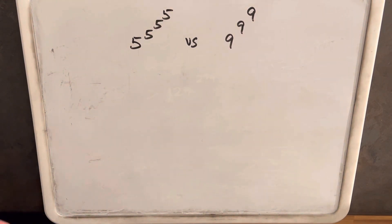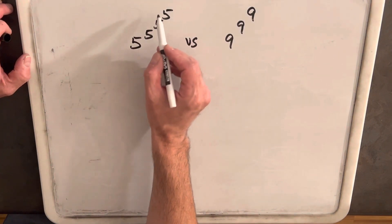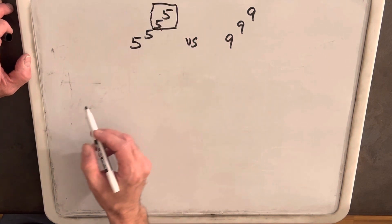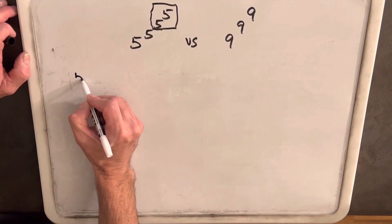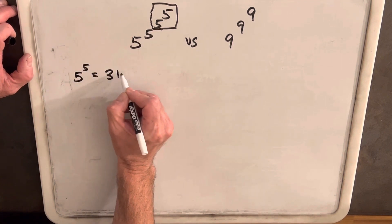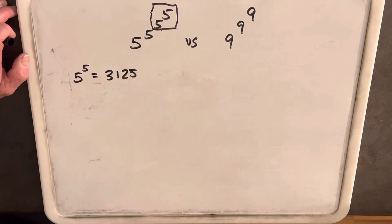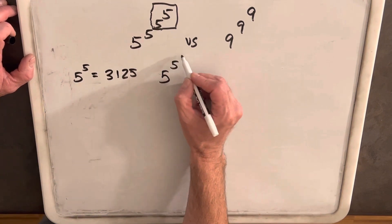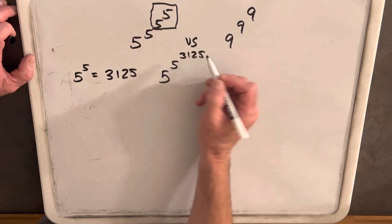Let's get started with the left side first. The first thing I want to do, let's just look at this right here. Try to simplify it. So if we just look at 5 to the 5, that's just actually 3,125. So I'm going to rewrite this problem as 5 to the 5 to the 3,125.